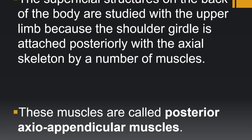Why do we need to discuss the back muscles in the upper limb? Because the muscles present in the upper limb and the scapula connect the upper limb to the vertebral column. We can call these axial muscles — they connect the appendicular skeleton to the axial skeleton. That is why the muscles connecting the upper limb bones to the vertebral column are called axial appendicular muscles, and the superficial muscle structures on the back are studied with the upper limb.